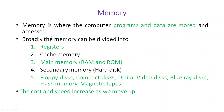Memory is the place where programs and data are stored and accessed. Broadly speaking, there are different kinds of memory: registers, cache memory, main memory, and secondary memory. Secondary memory includes floppy disk, compact disk, DVDs, Blu-ray disks — which can store huge amounts of information — as well as flash memory, USB drives, and magnetic tapes.